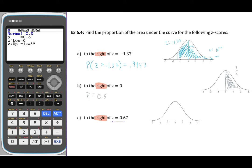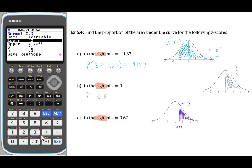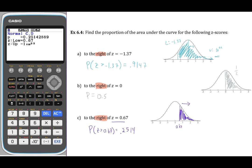For the last right-tail example, finding the area to the right of z = 0.67: this should be less than 0.5 since part A was more than half, part B was exactly half, and part C should be less than half. We press exit, change the lower bound to 0.67, press execute, and find that the probability of getting a z-score greater than 0.67 is 0.2514.